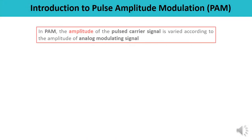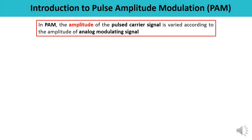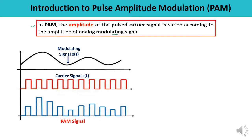First, let us understand what is pulse amplitude modulation. Pulse amplitude modulation is a type of modulation where the amplitude of a pulsed carrier signal is varied according to the amplitude of the analog modulating signal. Let us see by drawing the waveform. Here you can see Xt is the modulating signal, Ct is the pulsed carrier signal, and the third one is the PAM signal.